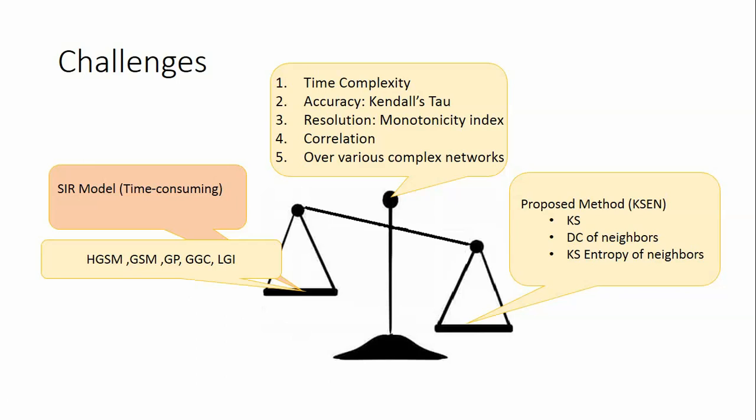Recently, methods like Hybrid Global Structural Model and Global Structural Model Perspective have been proposed, which use degree, K-shell, and shortest path between nodes, but their time complexity is high. Or methods like LGI and GGC are fast, but haven't high accuracy or resolution.